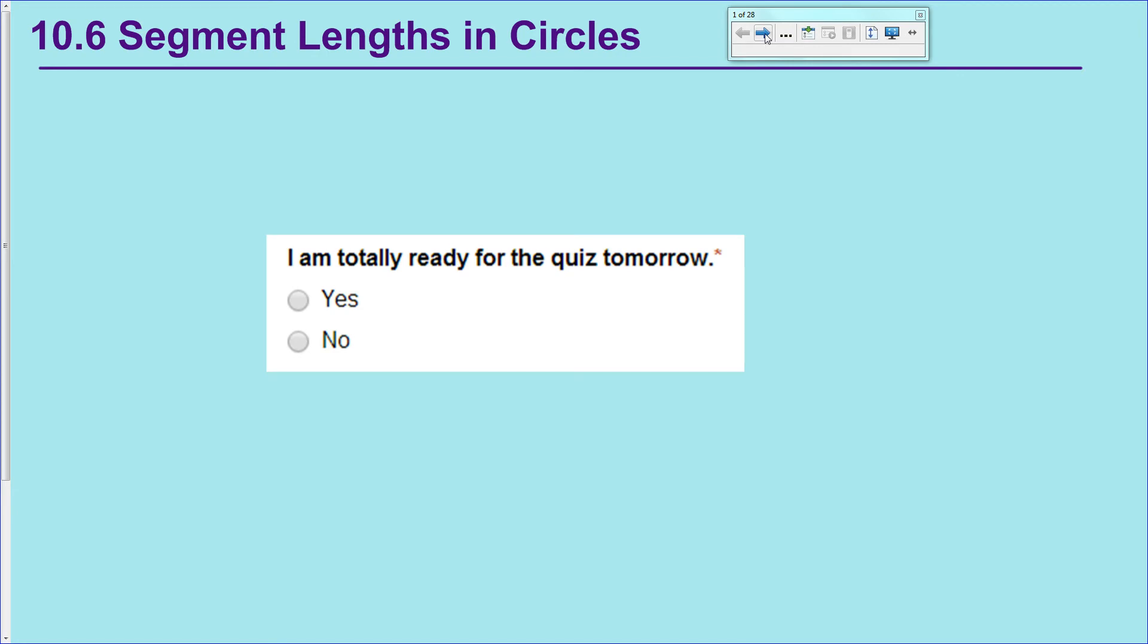Previously we talked about all the different interactions you could get with two lines intersecting a circle, and we talked about the angle measurements of all those situations. Today we're going to talk about the same thing, two lines intersecting a circle in some manner, and being able to calculate segment lengths.